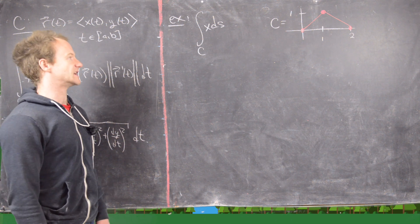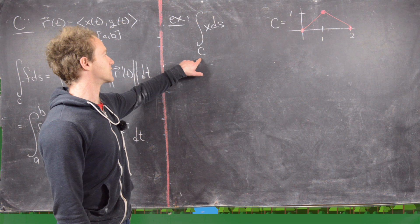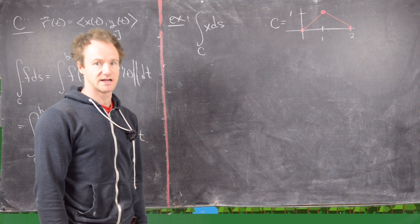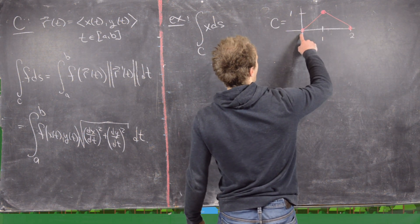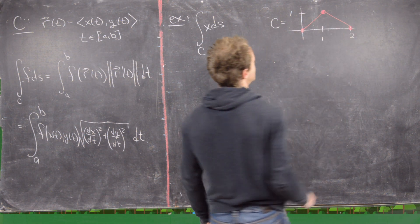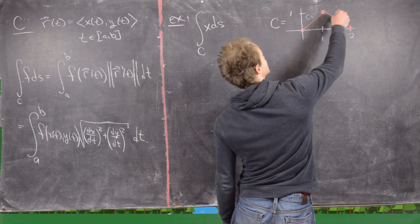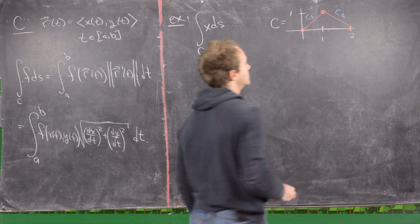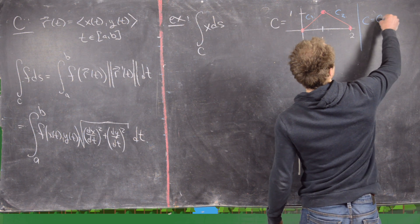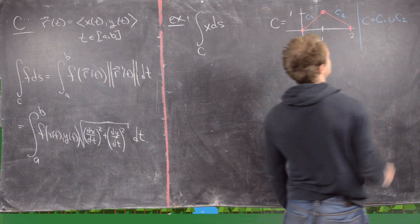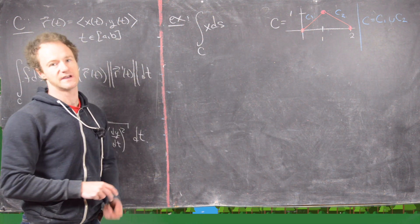For our first example I want to look at this piecewise smooth curve. We've got the integral over C of x ds and our curve is two line segments: from the origin to (1,1) and then from (1,1) to (2,0). We can break this up into two pieces, C1 and C2. Our whole curve is the union of C1 and C2.